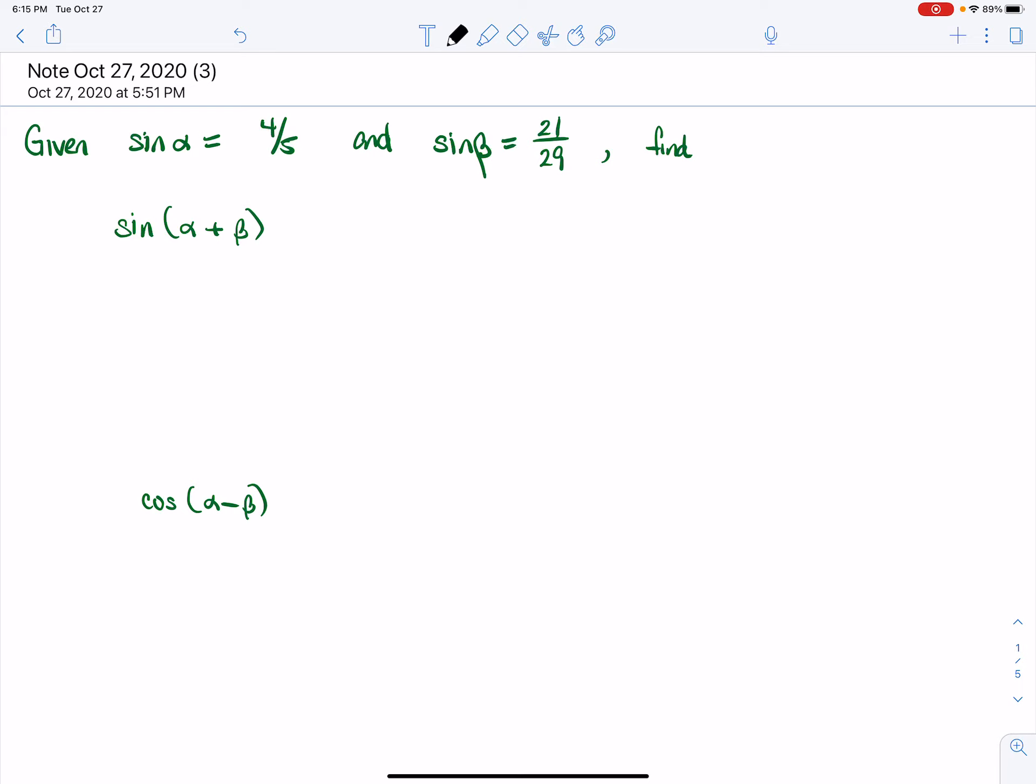So using the sum and difference identities, if we're given trig functions of different angles, without having to find the actual angles, we can find any trig function of a sum or difference of those angles if we need to.